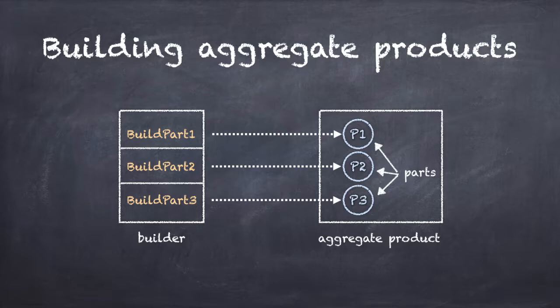You see this same type of separation in the second case, where we are parsing a complex representation and reading the data into a product. For example, there might be different types of financial transactions stored in XML and text files. A single abstract transaction instance can be initialized from either an XML builder or a text builder. Both builders read in the external files, extract the data, and use it to construct a new transaction instance.